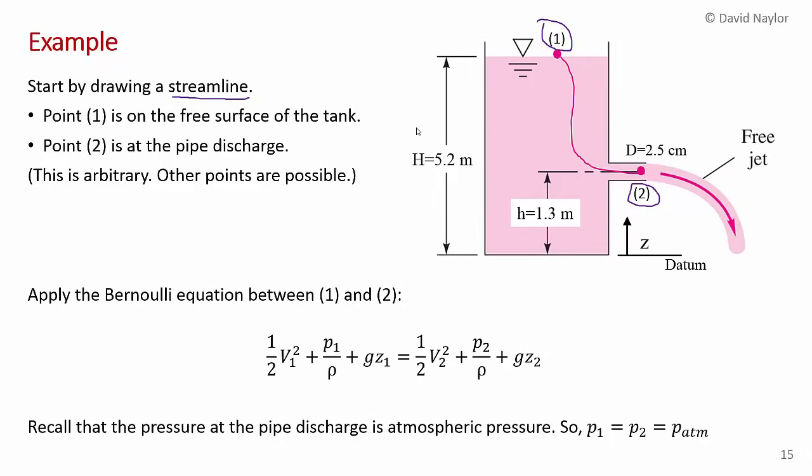So now we're going to apply Bernoulli's equation between points one and two. So we've got the kinetic energy at one, the pressure energy at one, the potential energy at one, all per unit mass, of course, that equals the kinetic energy at two, the pressure energy at two, and the potential energy at two, all per unit mass.